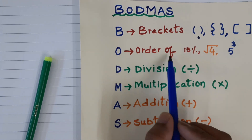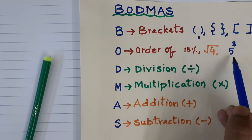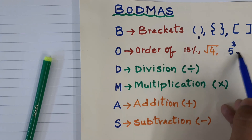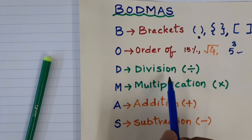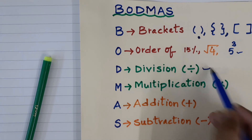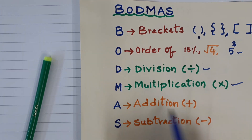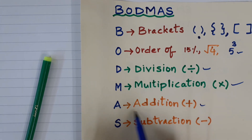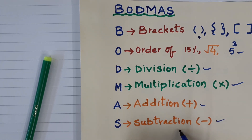O stands for order of — like percentages, square roots, and exponential forms. If we have these types of numbers we solve them second. The third order is D for division. Then after division we follow M for multiplication. Then A stands for addition. After multiplication we do addition. Then S stands for subtraction — finally we follow the subtraction order.